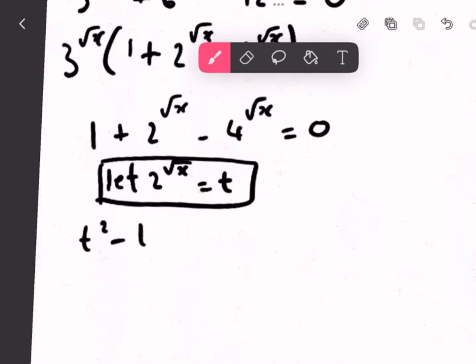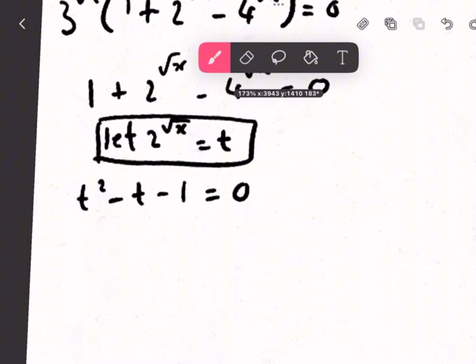So, t squared minus t plus 1. I mean, minus 1, sorry. So, it equals 0. Because we can just take it to the other side, and it'll do the thing.